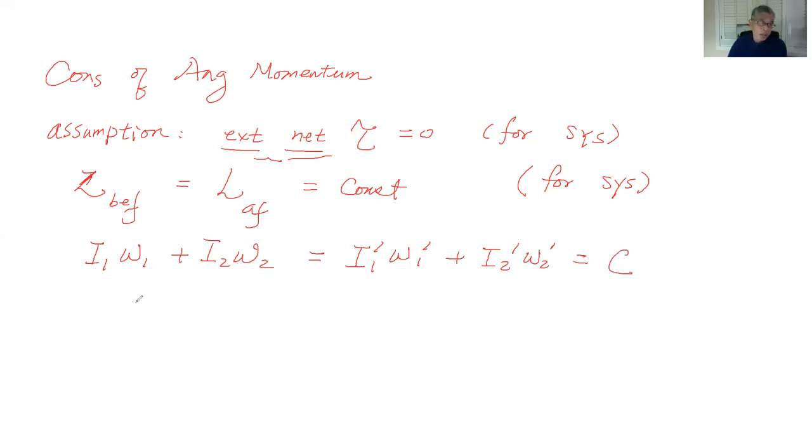But you can also have just one item. So that one item can be I omega, and that can be equal to I prime omega prime. So this is before and this is after. You can write it as this also. So that is it for conservation of angular momentum.